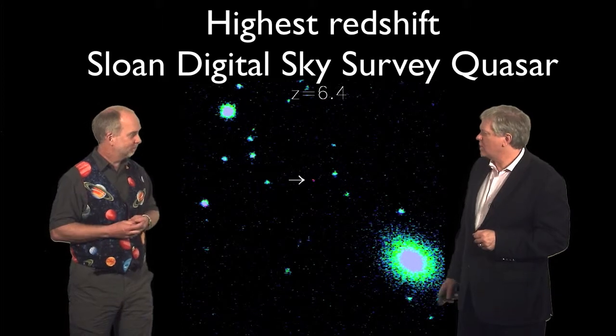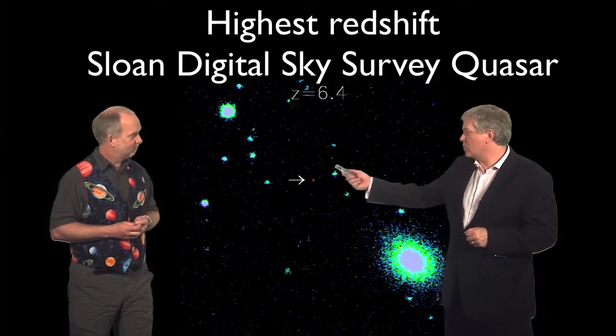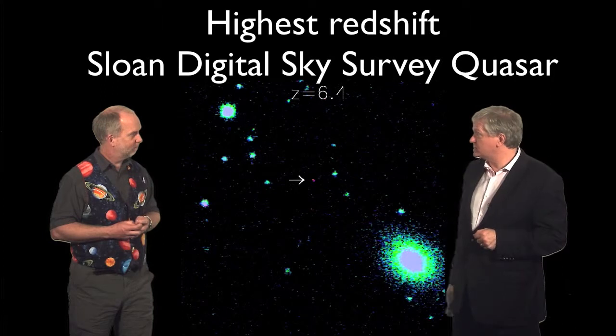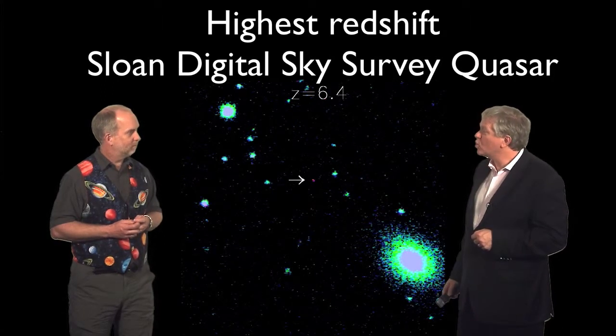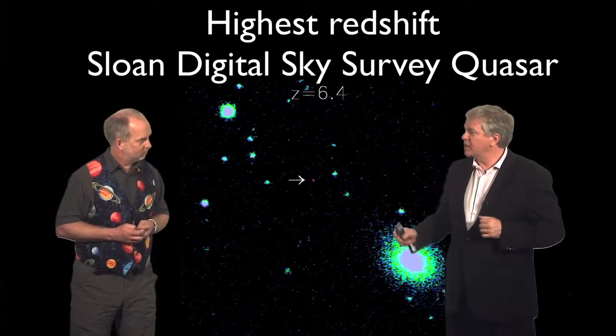Right. So, alright. So they found this one at 6.4. I know there were ones, they found lots and lots of quasars in the Sloan Digital Sky Survey. Were there enough to cause the universe to be re-ionized?